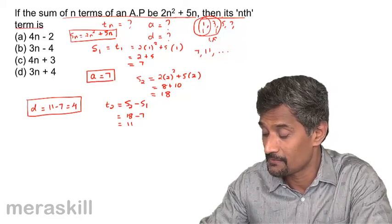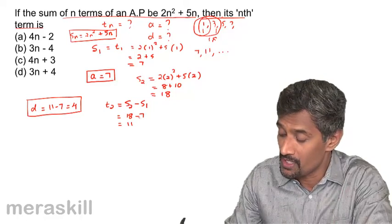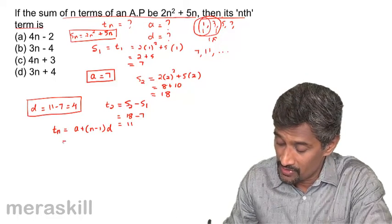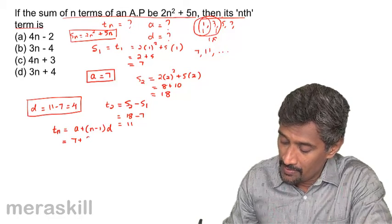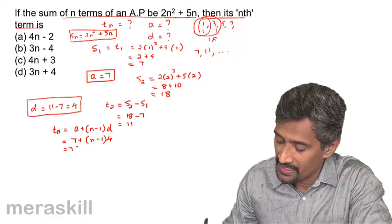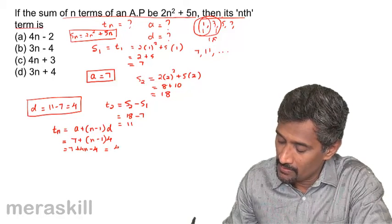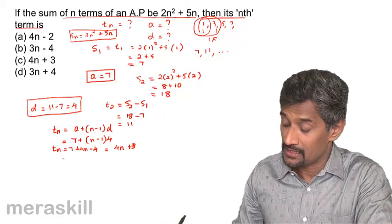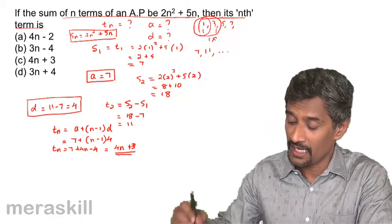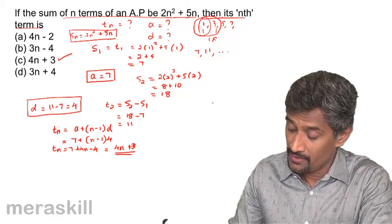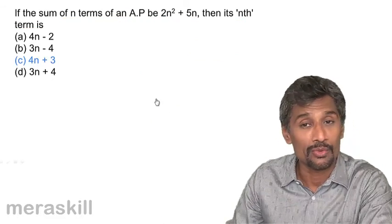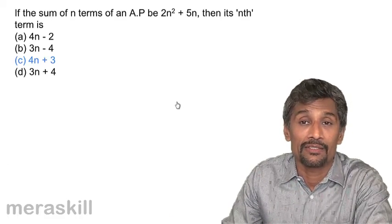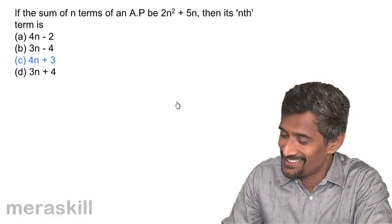With d = 4, we use tn = a + (n-1)d = 7 + (n-1)·4 = 7 + 4n - 4 = 4n + 3. So the nth term is 4n + 3, which matches the correct option. This example shows how to use the Sn formula to find t1 and t2, and hence determine the common difference.